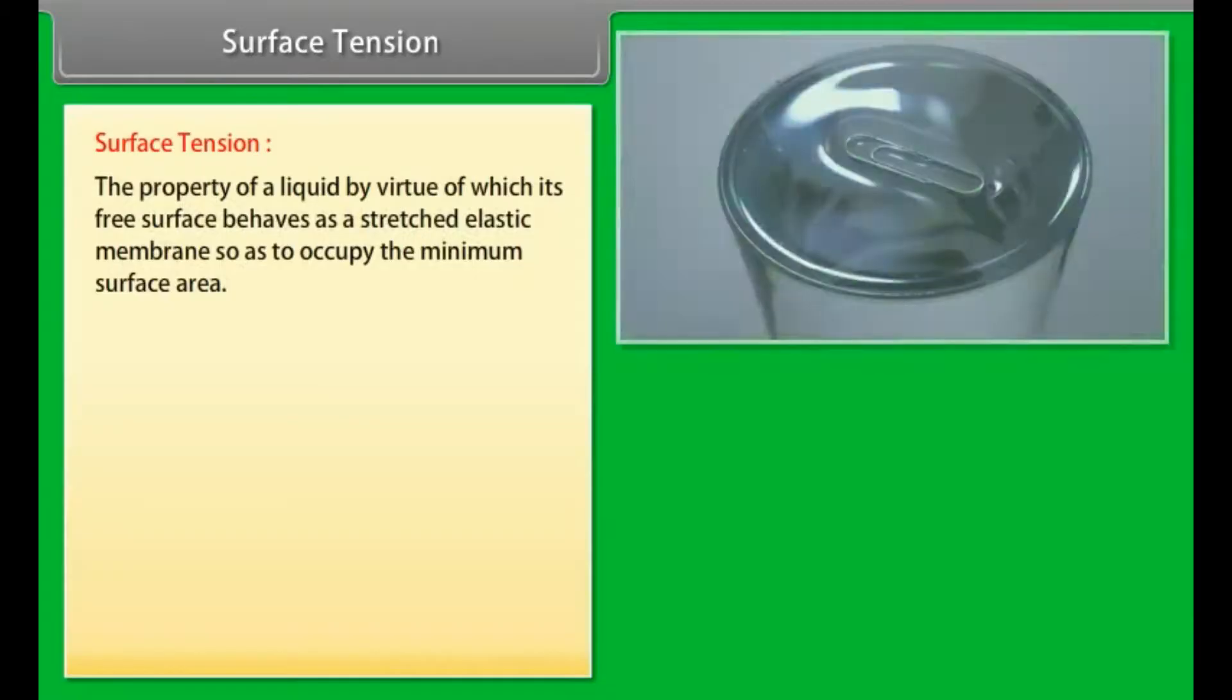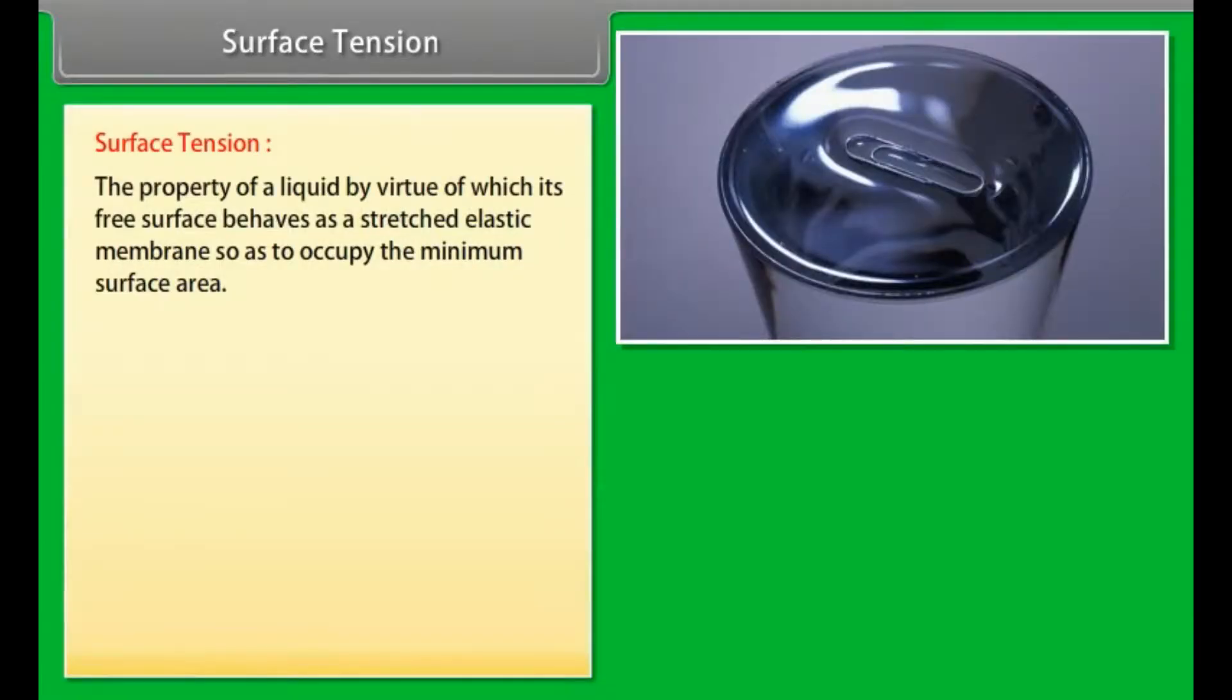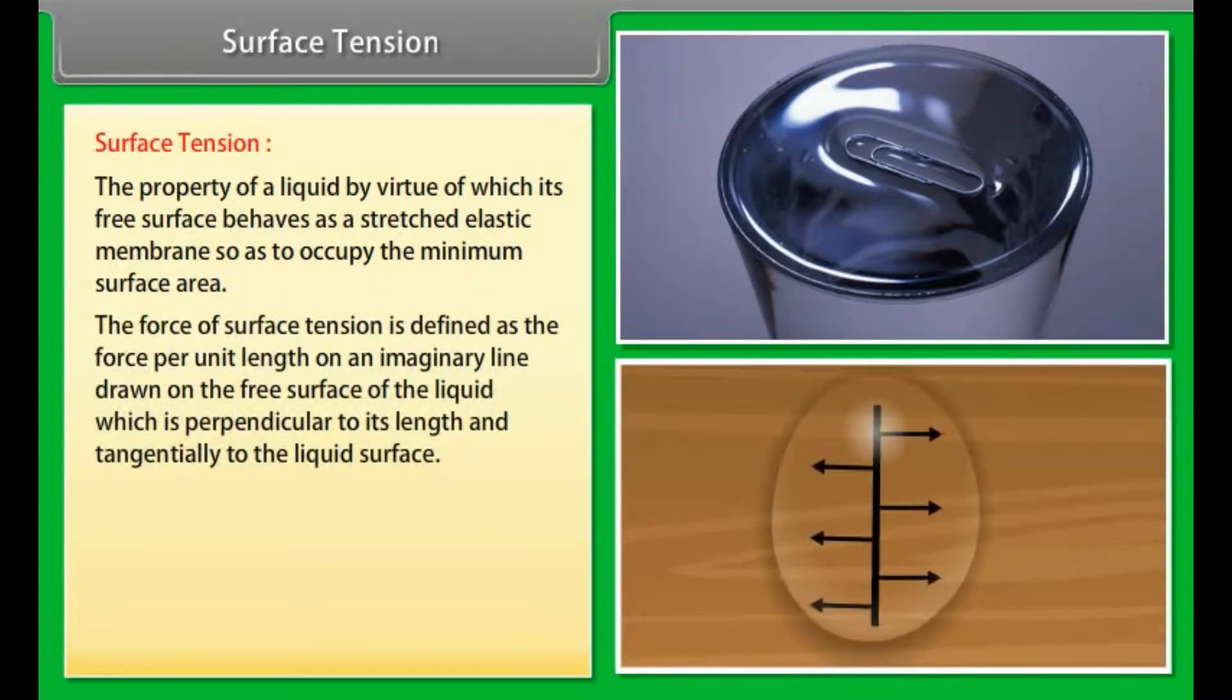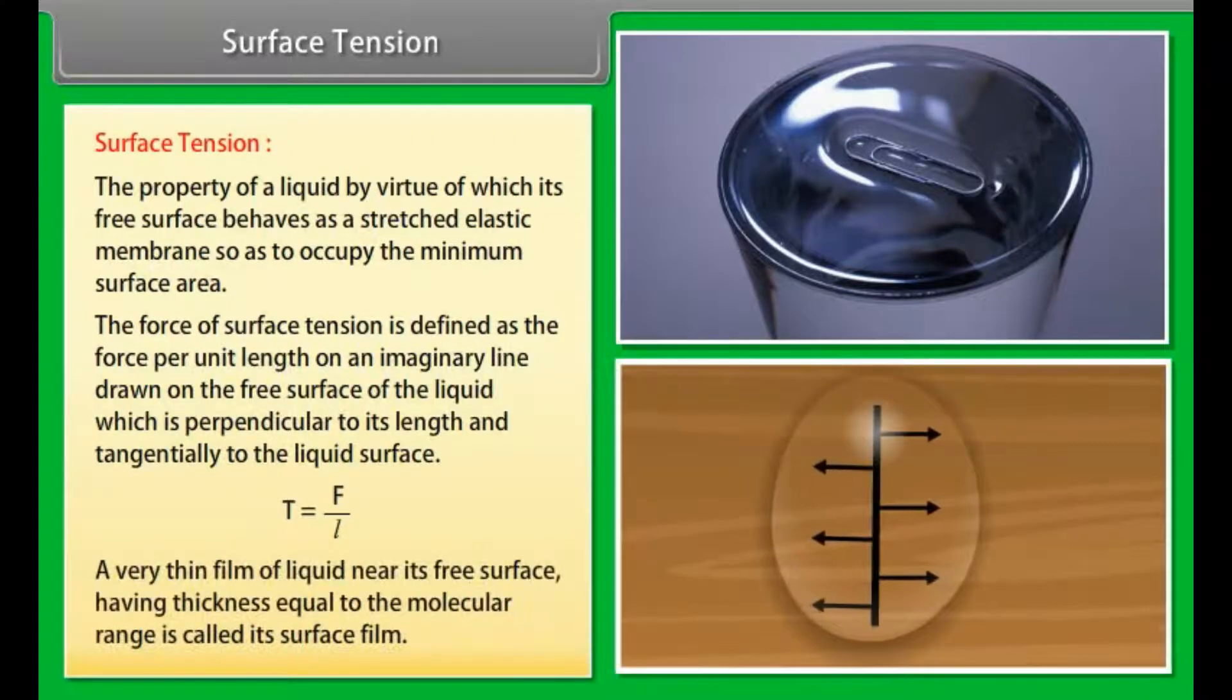Surface tension. Surface tension is the property of a liquid by virtue of which its free surface behaves as a stretched elastic membrane so as to occupy the minimum surface area. The force of surface tension is defined as the force per unit length on an imaginary line drawn on the free surface of the liquid which is perpendicular to its length and tangentially to the liquid surface. T = F/L. A very thin film of liquid near its free surface having thickness equal to the molecular range is called its surface film.